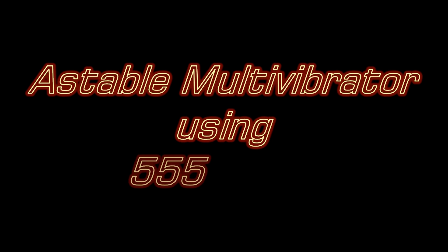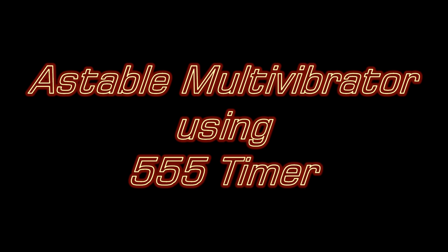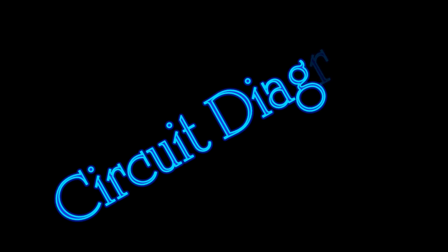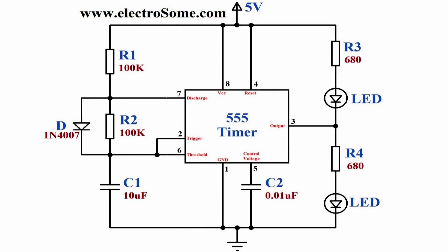In this tutorial we will see how to make a dancing light using a 555 timer wired as an astable multivibrator. Let's see the circuit diagram of dancing light or an astable multivibrator using a 555 timer.